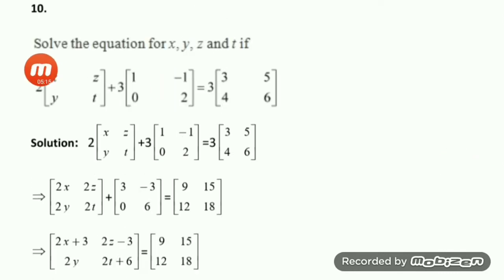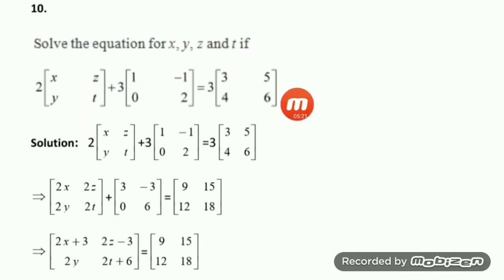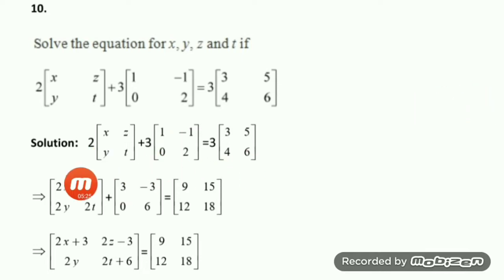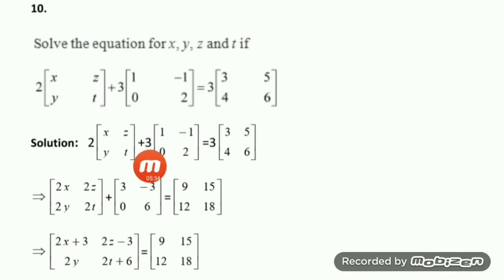Now let us go to question number 10. The question is: solve the equation for X, Y, Z, and T if this is the matrix equation given. As in the previous case, we write down the matrix equation first, then do the scalar multiplication. It becomes 2X, 2Z, 2Y, and 2T. On the other matrix we multiply by 3, getting [3, -3; 0, 6].